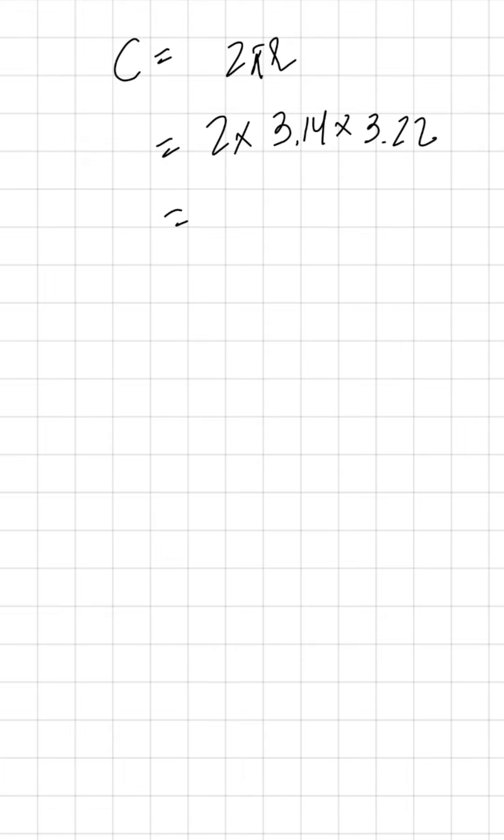Let's multiply all these. So 2 multiplied by 3.14, multiplied by 3.22. This gives us approximately 20.22. So this is the circumference.